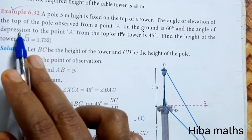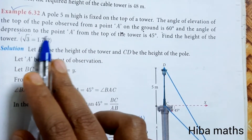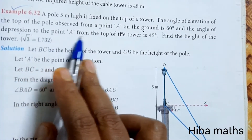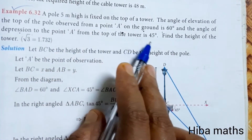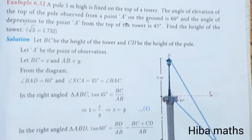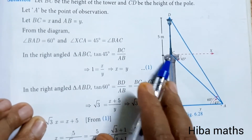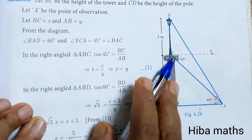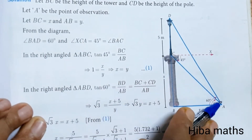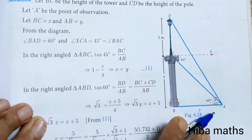The angle of depression to point A from the top of the tower is 45 degrees.